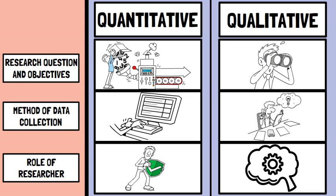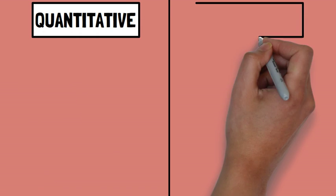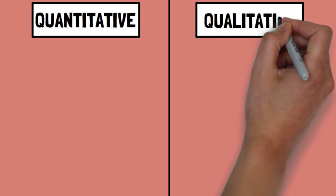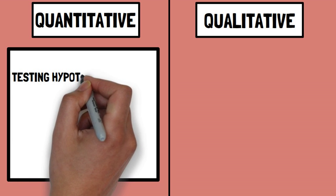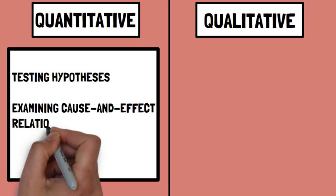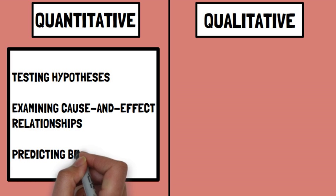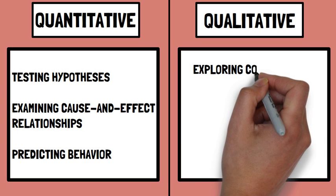So, qualitative and quantitative research methods are two different approaches to studying human behavior in psychology. Both methods have strengths, limitations, and different applications in research. Quantitative research is suitable for testing hypotheses, examining cause and effect relationships, and predicting behavior. Qualitative research is suitable for exploring complex phenomena.